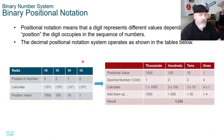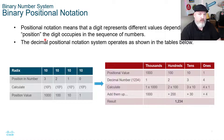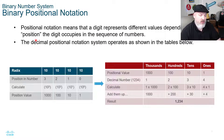Now, when we look at the binary positional notation, there are a couple of different ways to convert binary. In this video and in this module for the Cisco course, it uses the positional notation. That means a digit represents different values depending upon the position that the digit occupies in the sequence of numbers. So the decimal positional notation system operates as shown in the table here.